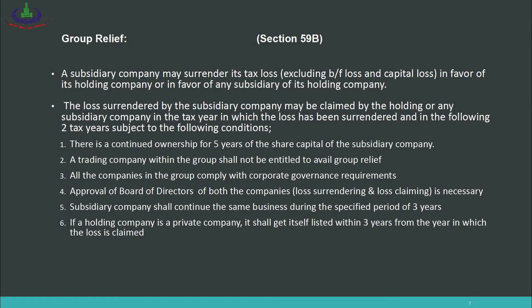Condition 4: The subsidiary company shall continue the same business during the specified period of three years. Condition 5: If the holding company is a private company, it shall get itself listed within three years from the year in which the loss is claimed — meaning it must convert to a public limited company and list on the stock exchange within three years. These are the conditions for group relief or group taxation, and all must be fully met before any holding or subsidiary company can claim this relief.